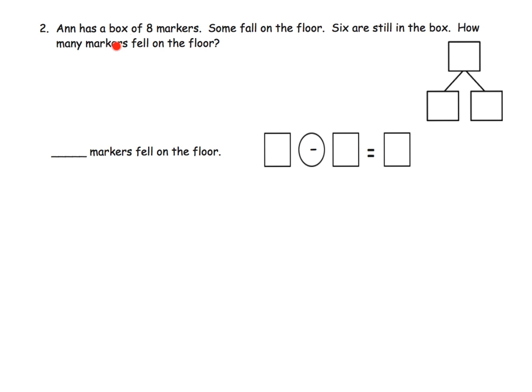So Ann has a box of 8 markers. Some fell on the floor, so there's our missing unknown, our change that's unknown. Now 6 are still in the box. How many markers fell on the floor? So the first thing we're going to do is we've been asked to model by drawing, so we're going to start by modeling those 8 markers: 1, 2, 3, 4, 5, 6, 7, 8.